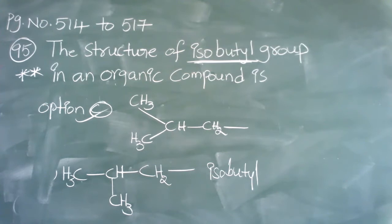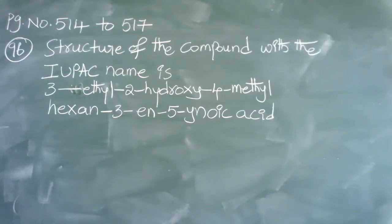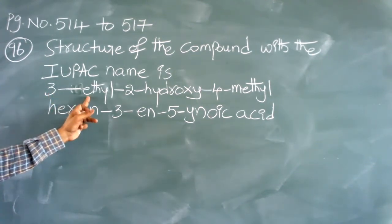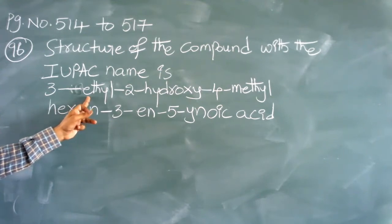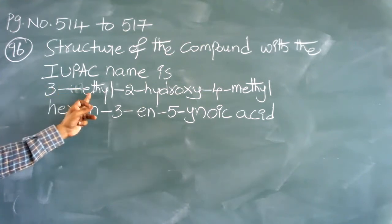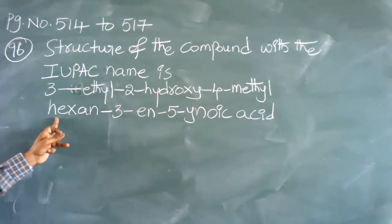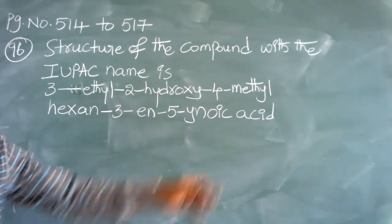Moving to question number 96, the structure of the compound with the given IUPAC name. Note: in your material the question says 3-methyl, but you have to change it to 3-ethyl. The correct name is 3-ethyl-2-hydroxy-4-methylhexane-3-ene-5-inoic acid.